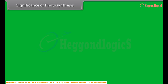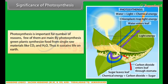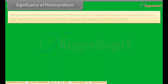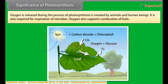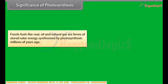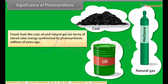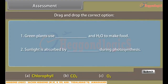Photosynthesis is important for a number of reasons. By photosynthesis, green plants synthesize food from simple raw materials like CO2 and H2O, thus sustaining life on earth. Oxygen released during photosynthesis is needed by animals, human beings, and microbes for respiration, and also supports combustion of fuels. Fossil fuels like coal, oil, and natural gas are forms of stored solar energy synthesized by photosynthesis millions of years ago.